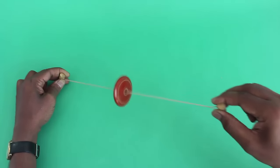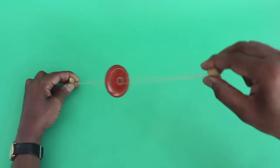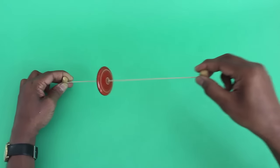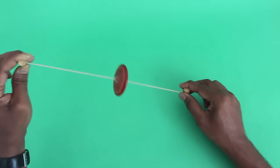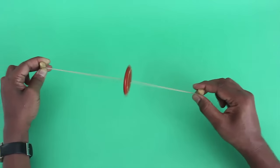Children have made this toy with a big button or by flattening the crown cap of a coke bottle, punching two holes and weaving a string loop through it.